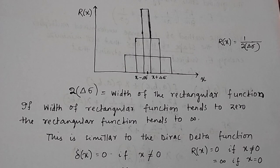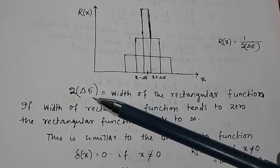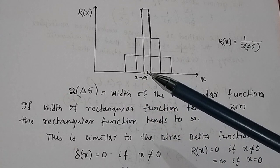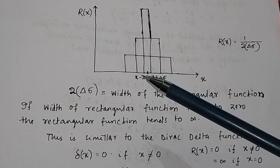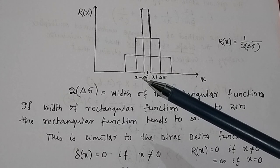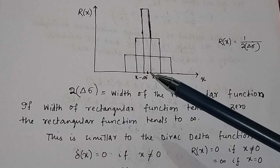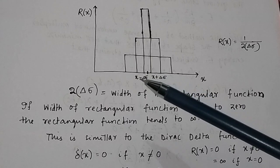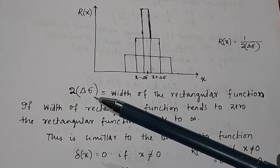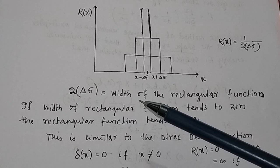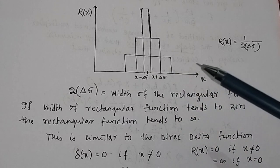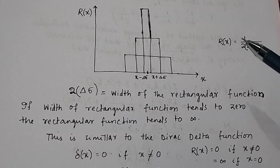We take the width of the rectangular function to be 2·Δσ. Suppose the center is at x, then you have Δσ on the left side, so the left boundary is x minus Δσ and the right boundary is x plus Δσ. The width of the rectangle equals 2·Δσ. We always take the height of the rectangular function R(x) equal to 1 divided by 2·Δσ.